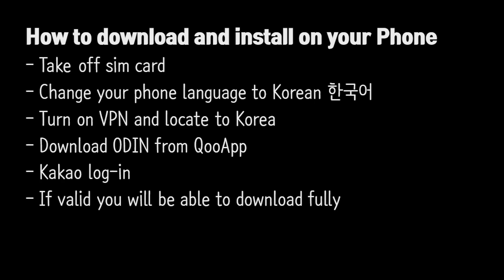We also have a how-to on downloading and installing on your phone. It's actually working for some people, so it's not confirmed yet. But if you take off your SIM card and change your phone language to Korean, turn on the VPN you have and locate to Korea, then download with your credentials and Kakao login — it's the same process. If valid, you'll be able to download fully on your phone as well.